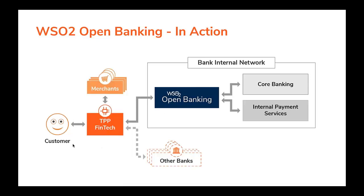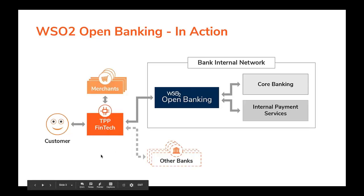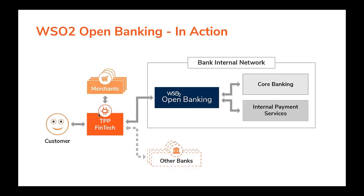As an example, in the AISP flow, a FinTech with an AISP application will aggregate customer account data exposed from different banks into one application and show a consolidated view to the customer. Similarly, in the PISP flow, the PISP application will perform payment transactions by calling each bank's exposed APIs to do the payments.